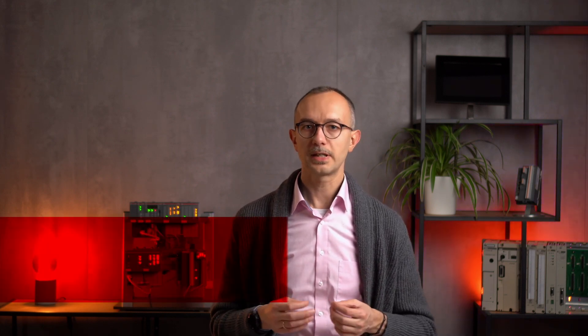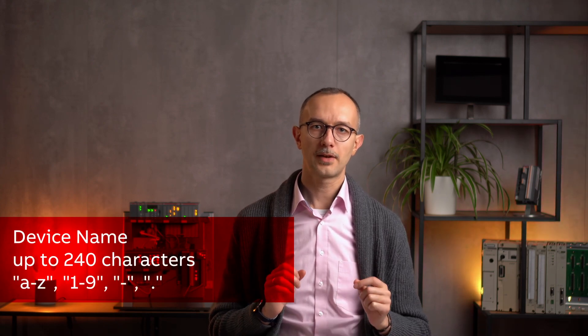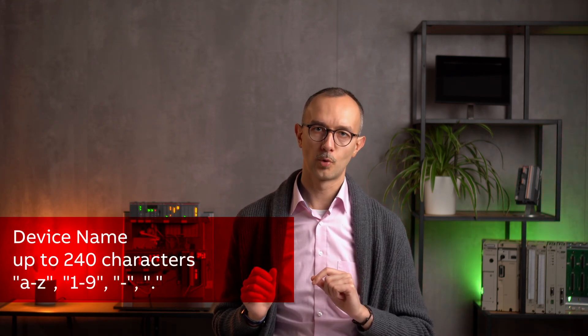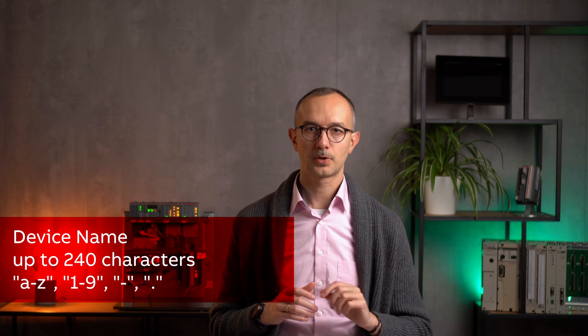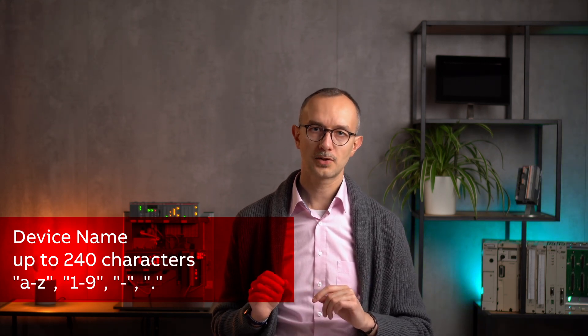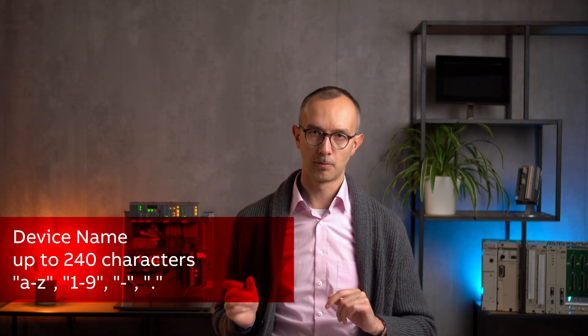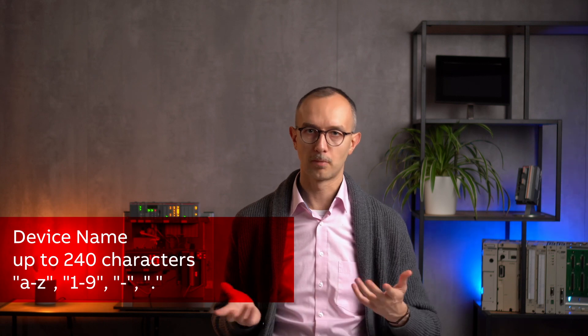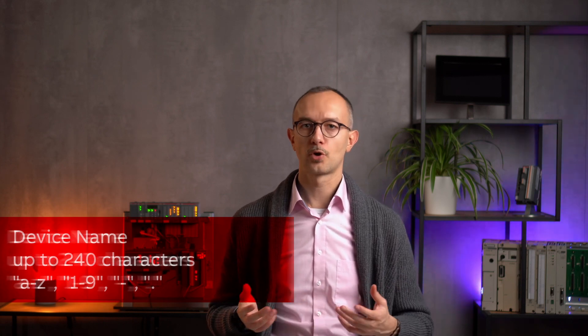Important thing to understand is that along with an IP address, PROFINET protocol also uses I.O. device name to run the communication. Device name is a text string with a length up to 240 characters. Allowed characters are lowercase latin letters, numbers, hyphen, minus, and fullstop character.